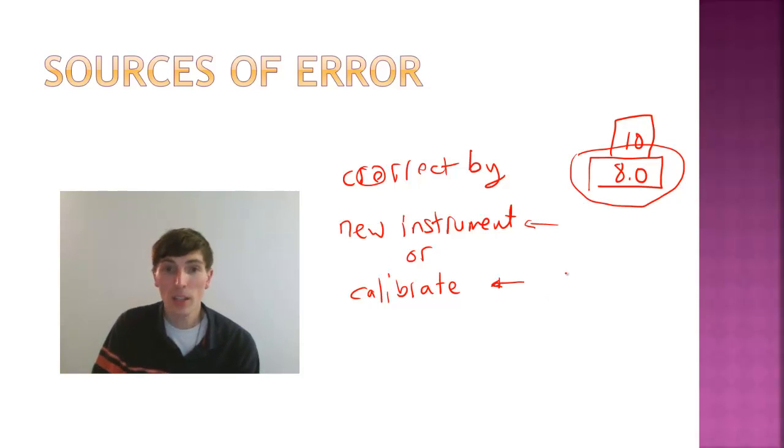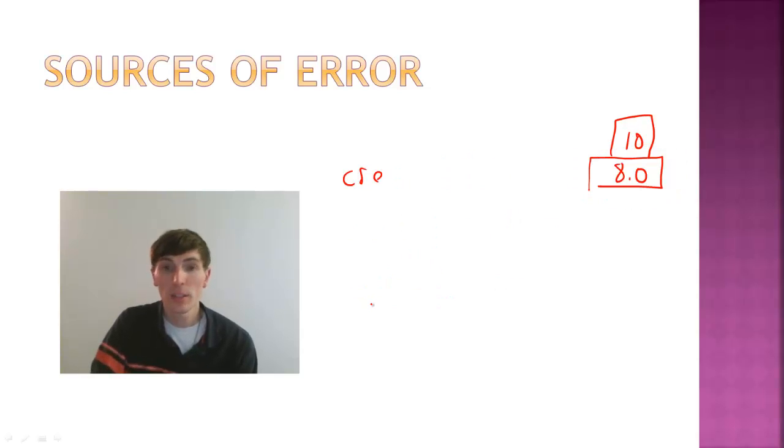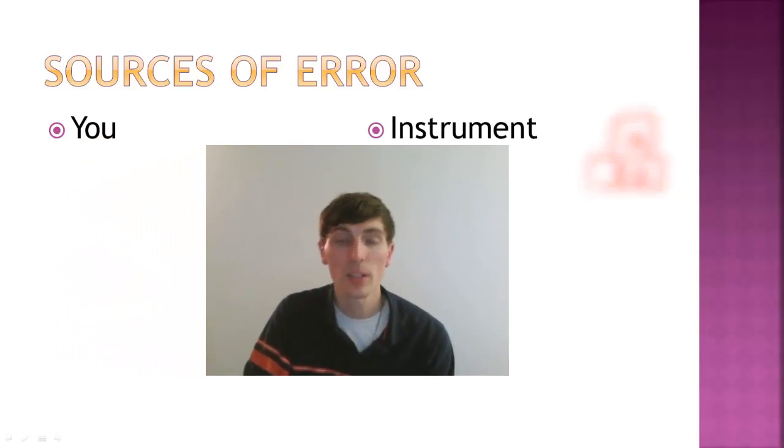So this is, in closing, these are our two sources of error, you and the instrument. And as we go through the lab, we're going to try to minimize these sources of error. And as we talk about significant figures, taking into account this error as you make measurements and do some math of that. So I hope this was helpful and I will see you guys in class. Thank you.